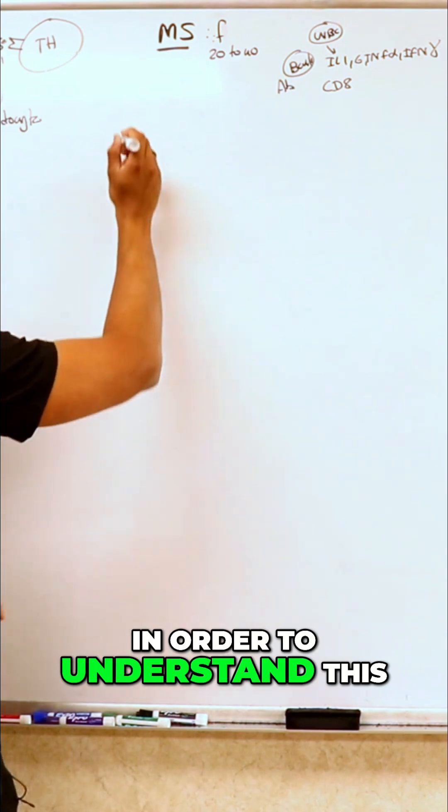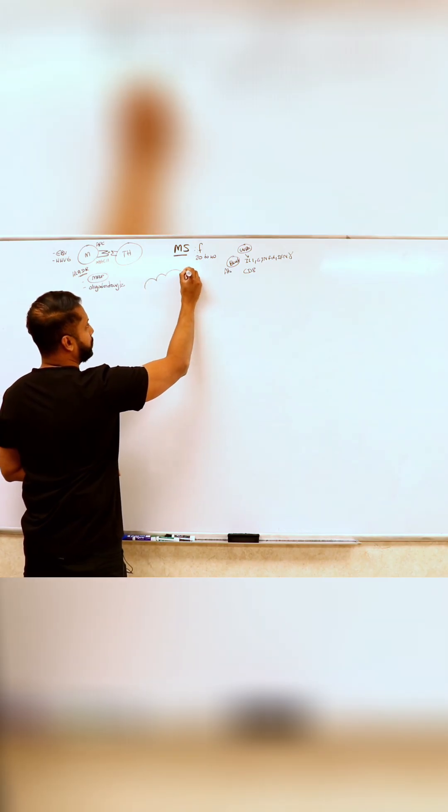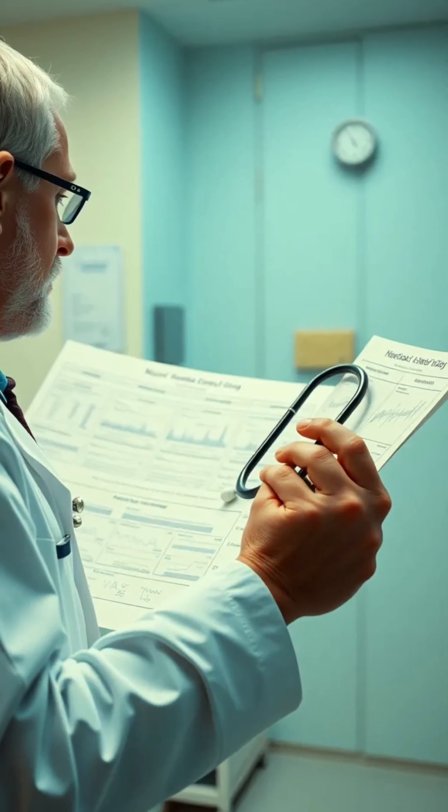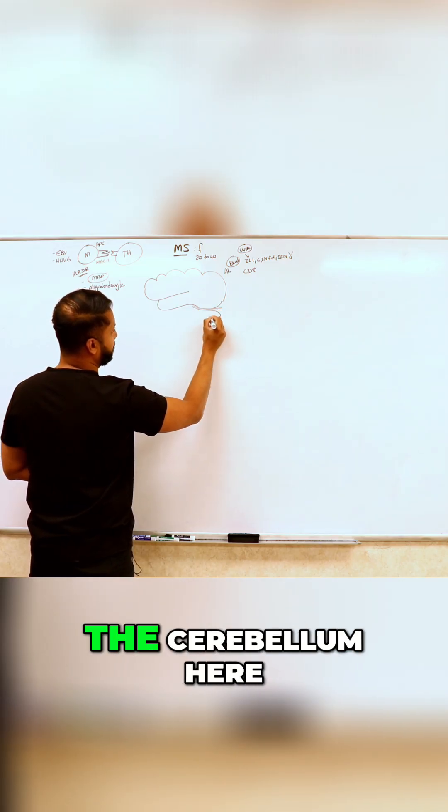In order to understand this, let's draw the brain. This is the brain and this is your tentorium, and I'm going to draw the cerebellum here.